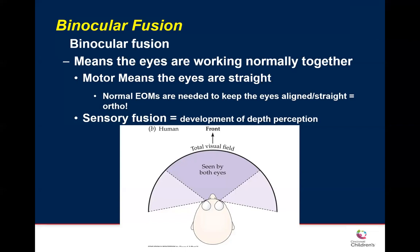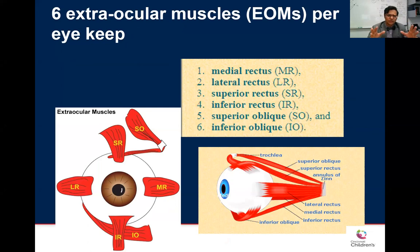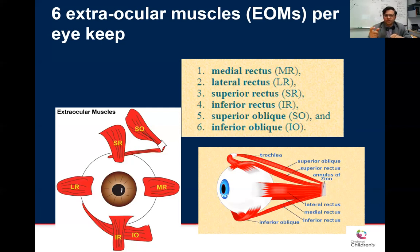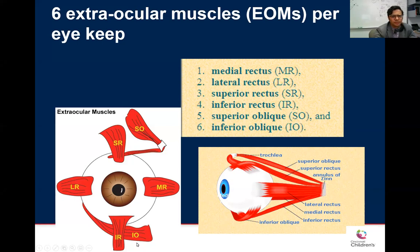There's motor fusion and sensory fusion. When there's a misalignment in the motor fusion, that's what we measure. There are six extraocular muscles, and three cranial nerves are involved in moving them — we're going to talk about cranial nerve palsies. We have four recti muscles and two oblique muscles, and we'll discuss which cranial nerves go to which muscles and what type of misalignment or double vision results.